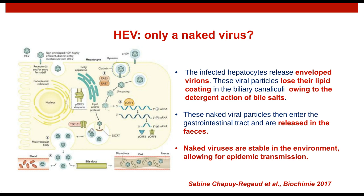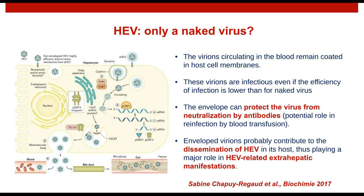A careful examination of the HEV replication cycle has shown that infected hepatocytes can release enveloped viral particles, and the fate of these particles depends on whether they enter the bile ducts or the bloodstream. Viral particles entering the bile ducts lose their envelope due to the detergent activity of bile salts, becoming naked and entering the gastrointestinal tract to be released through feces. Conversely, particles entering the bloodstream retain their lipid-derived membrane, and this envelope plays an important role by protecting HEV from neutralizing antibodies, enabling dissemination to different body compartments and contributing to extrahepatic manifestations.